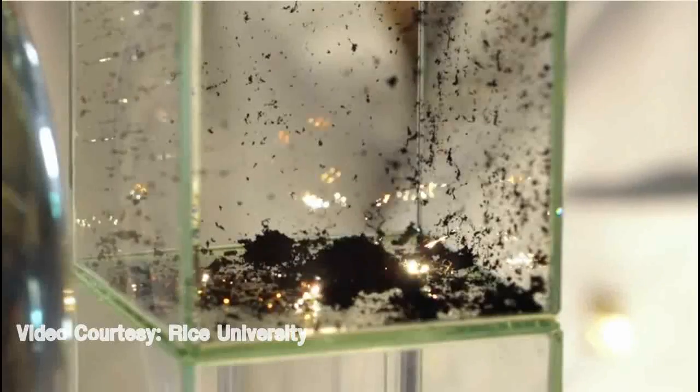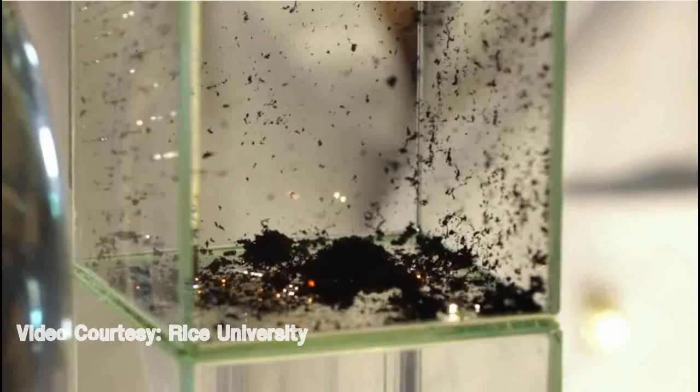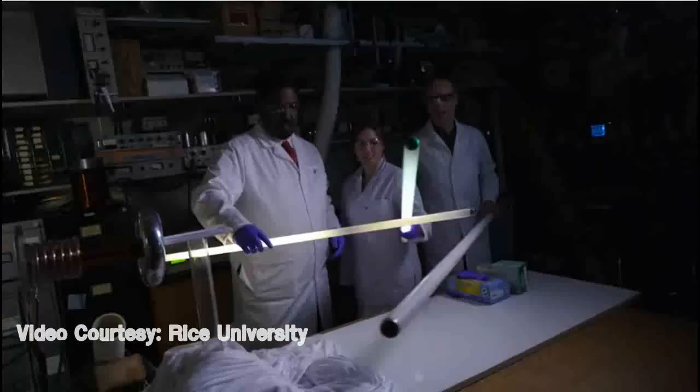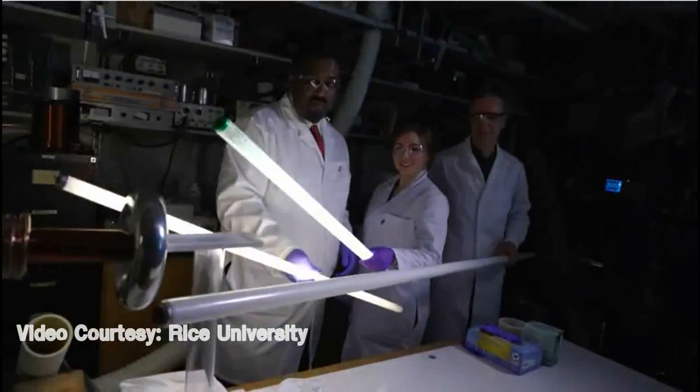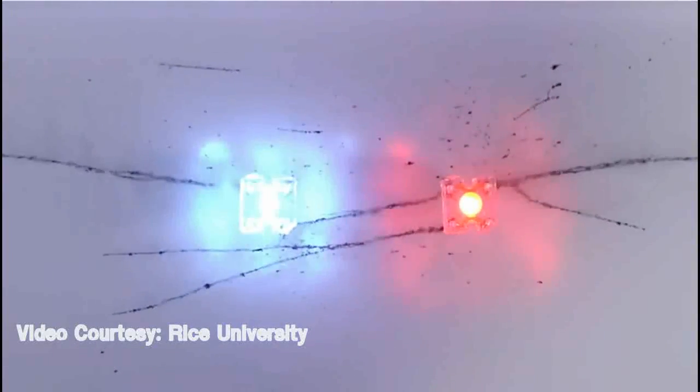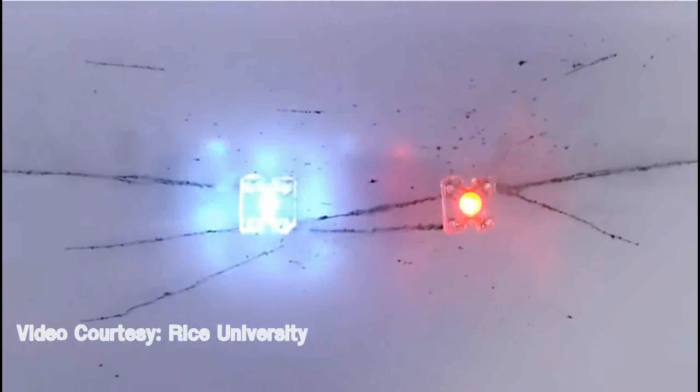The researchers discovered that the phenomenon simultaneously assembles and powers circuits that harvest energy from the field. In one experiment, nanotubes assembled themselves into wires, formed a circuit connecting two LEDs, and then absorbed energy from the Tesla coil's field to light them.